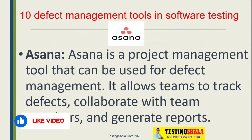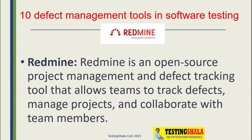The next one is Redmine. Redmine is an open source project management tool where we can use defect tracking to track defects, manage projects, and collaborate with various team members as well using this Redmine bug tracking tool.